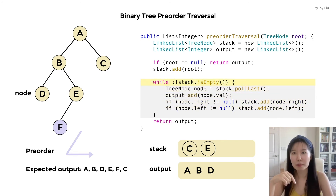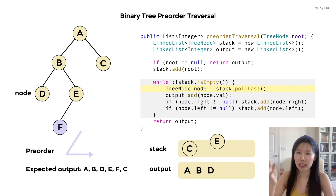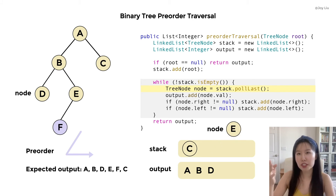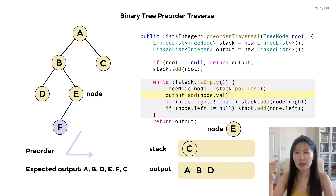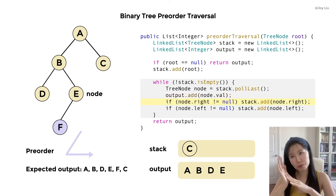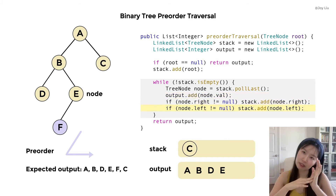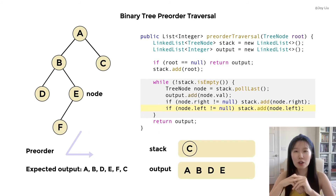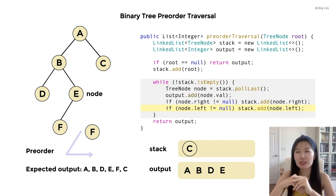Let's look back again — stack is not empty. We pull the last element out and delete it from the stack. We name it as node. Now node switches from D to E. We get the value of this node and add it to the output. Check the right child — nope. Check the left child — yes. E has a single child, so we grab it to the stack.